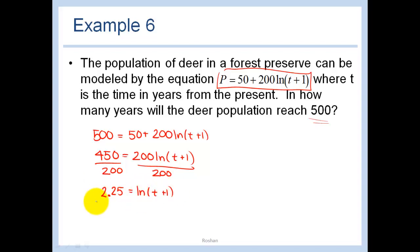Now to get rid of the ln let's just raise both sides to e. So we get that t plus 1 is equal to e to the 2.25. So I know that t is equal to e to the 2.25 minus 1. If you want to go ahead and put that in the calculator you should get about 8.5 years. And that's your answer.